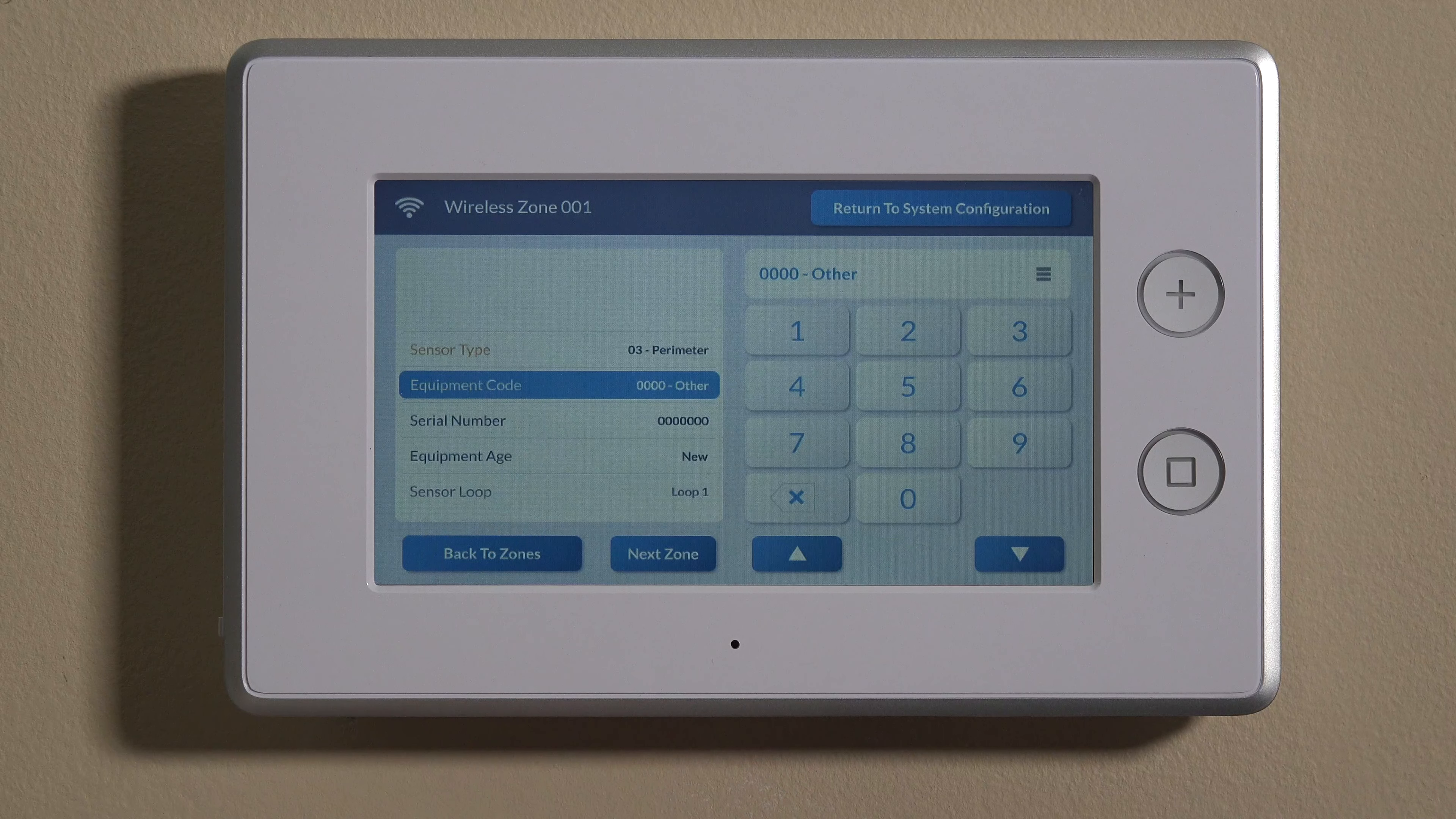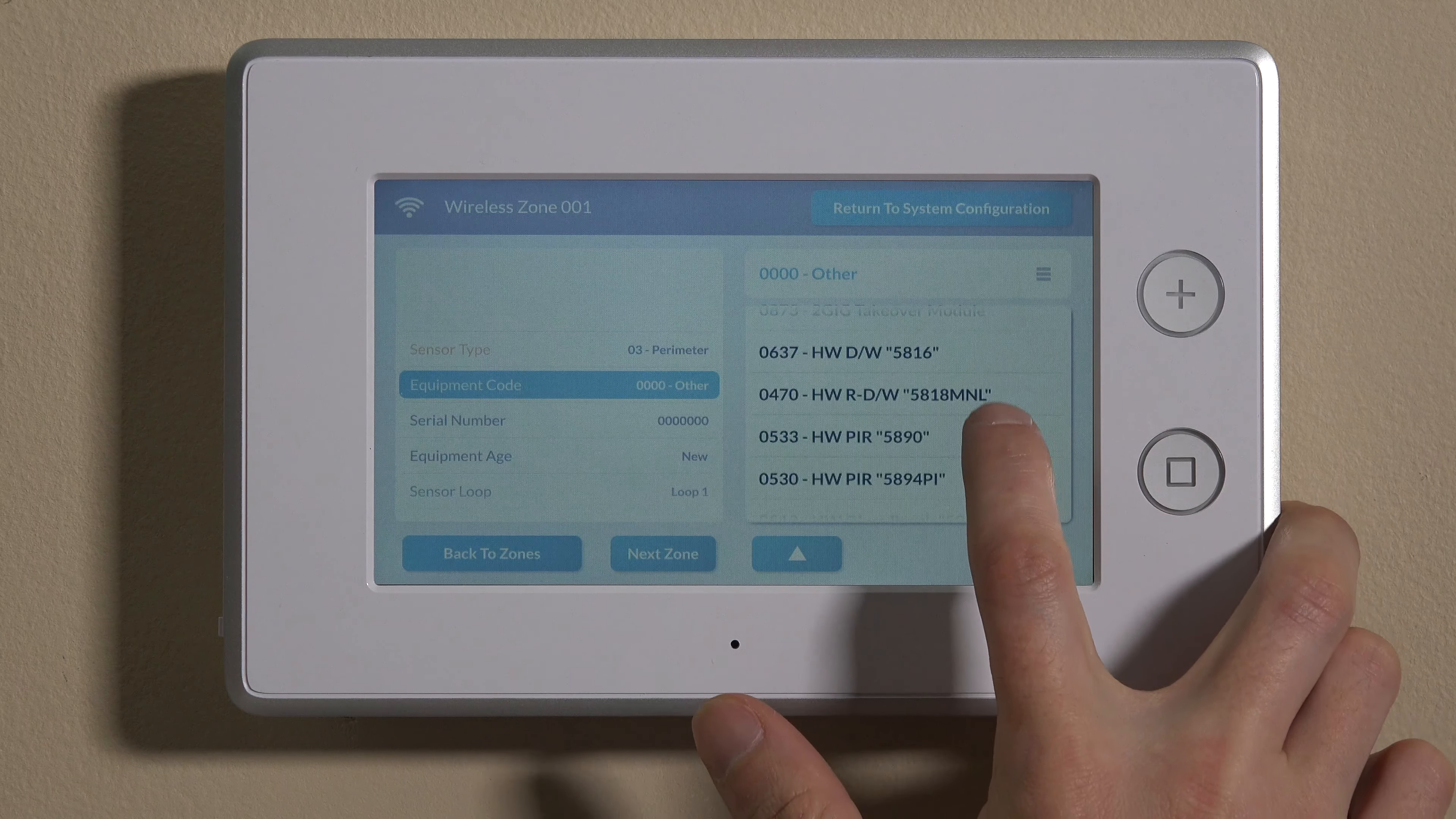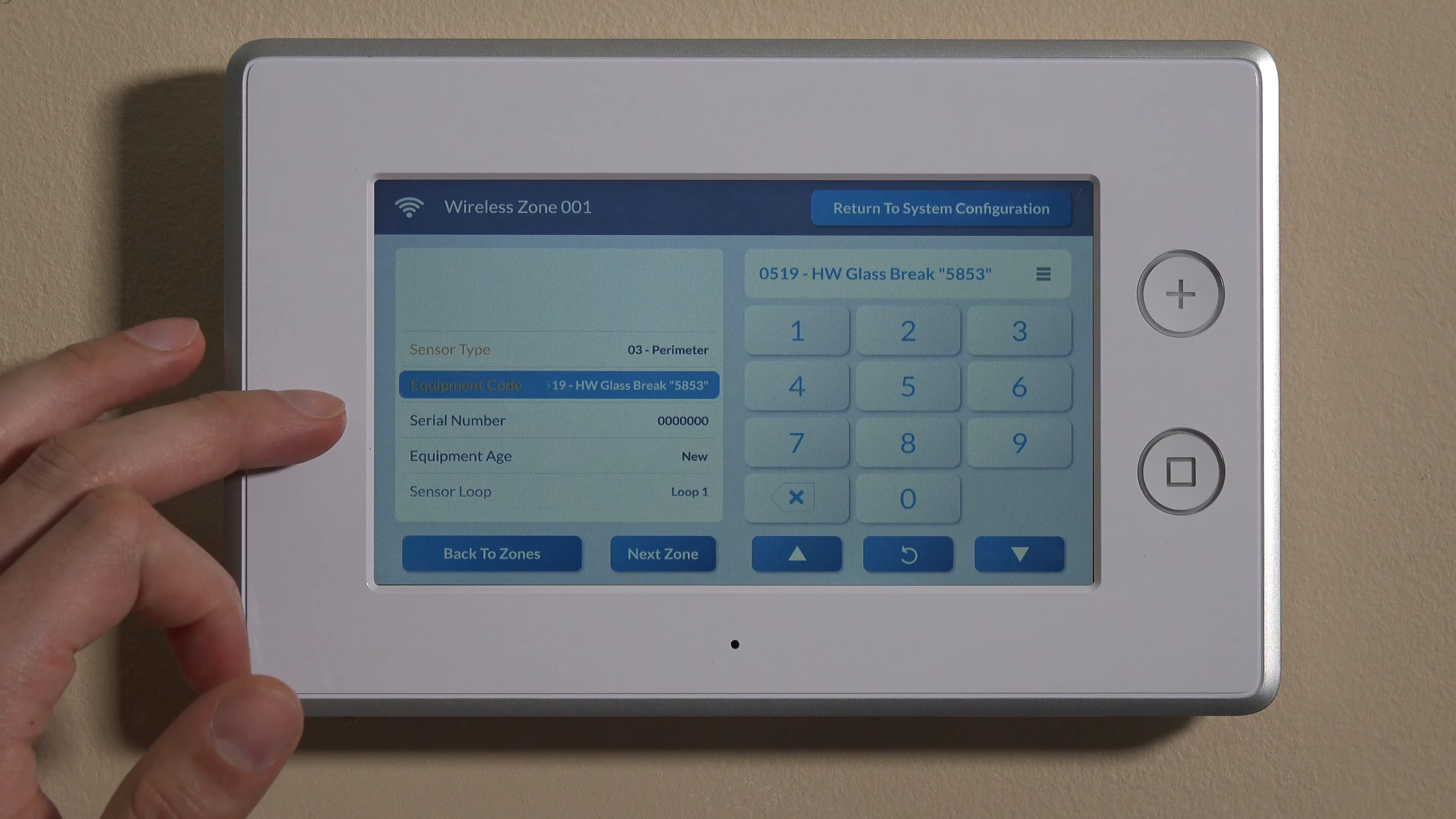So we'll hit Equipment Code and we'll select this little drop down menu on the right. We'll swipe down to Honeywell. This is a glass break, Honeywell 58... go back in here, 5853. So it's actually listed right in the menu as 0519 for the Serial, or for the Equipment Code.